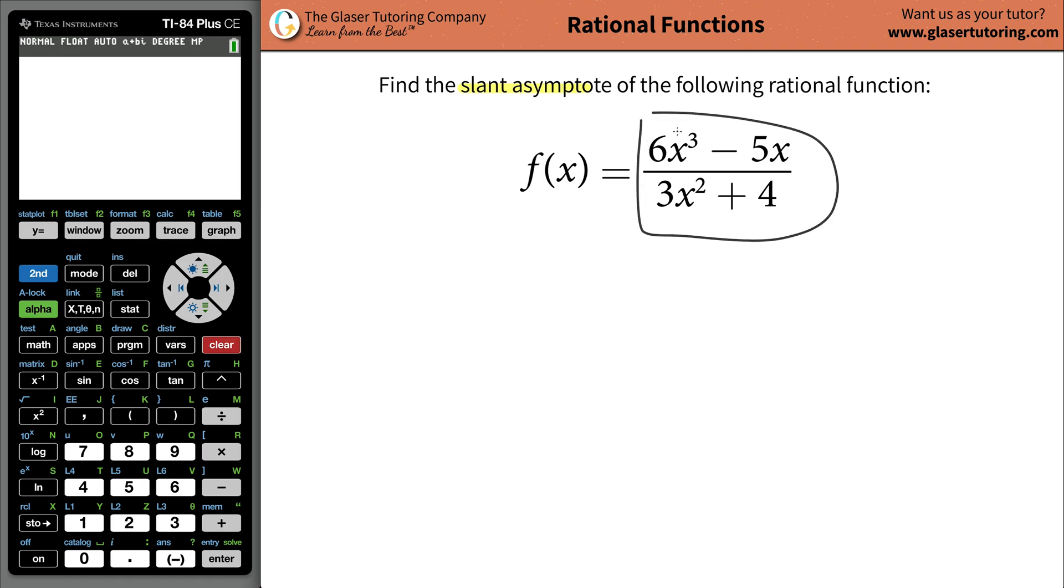Now it turns out whenever you have a rational function, which is just some polynomial function being divided by some polynomial function, whenever the power of x, the highest power of x in the numerator, which is 3, is greater than the highest power of x that you have in your denominator, which is 2, it'll turn out that you'll always have a slant asymptote.